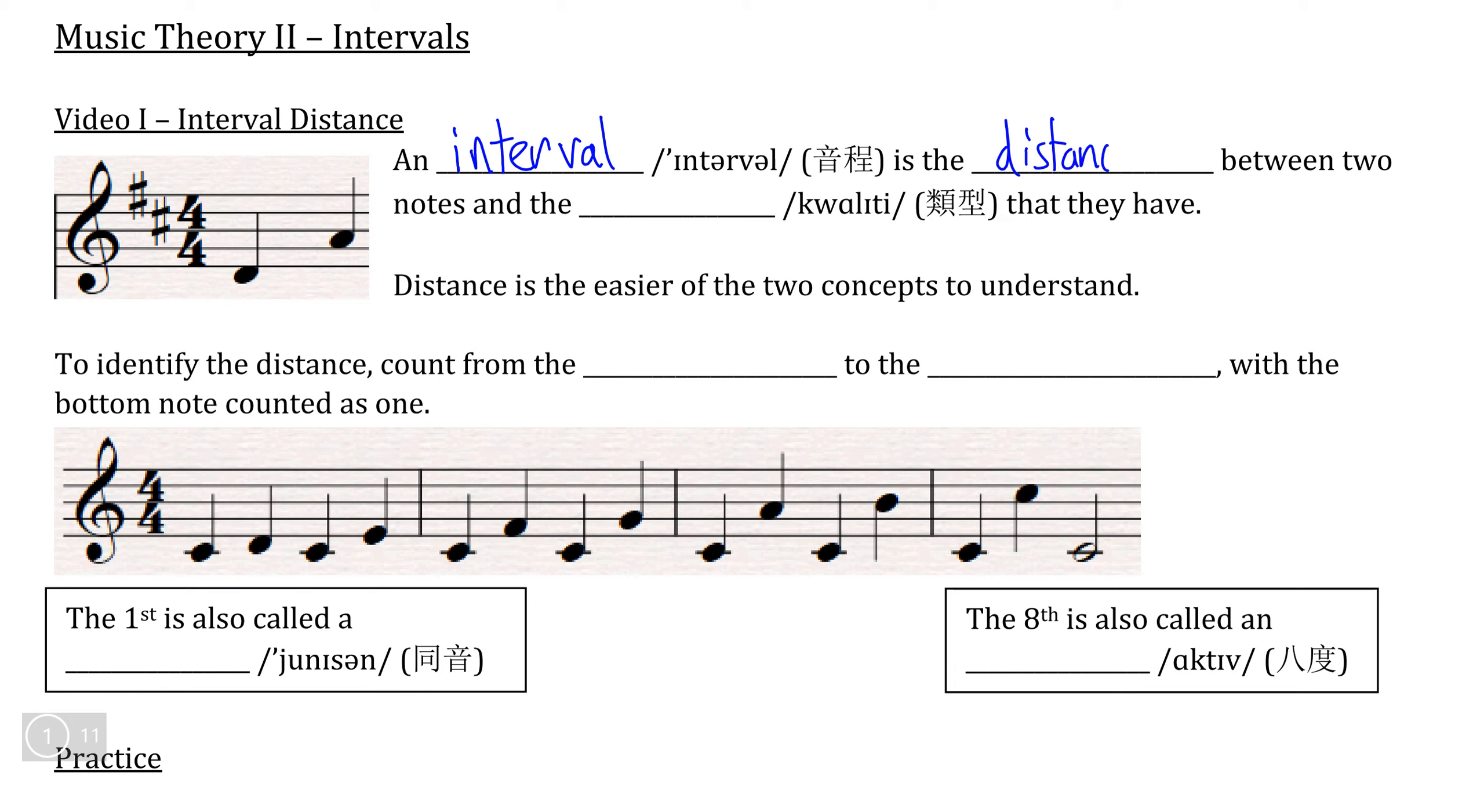An interval can measure the distance between two notes. For example, the distance between D and A, the top note and the bottom note here, and then examines what we call the quality that exists between these two notes, which is a little bit harder to describe.